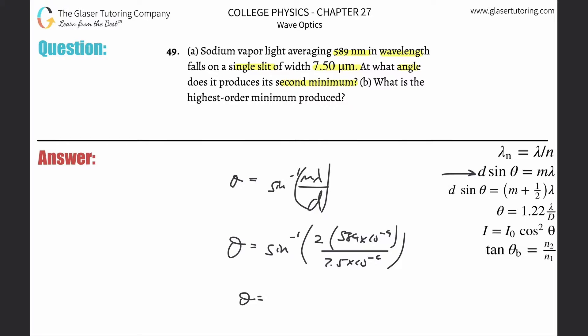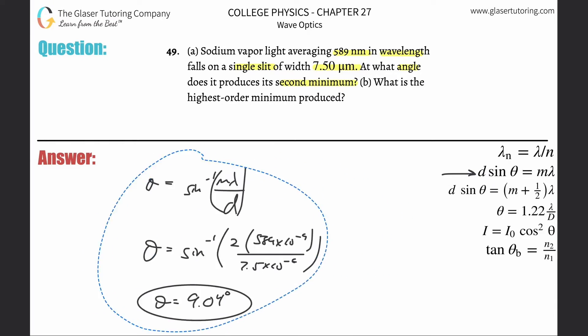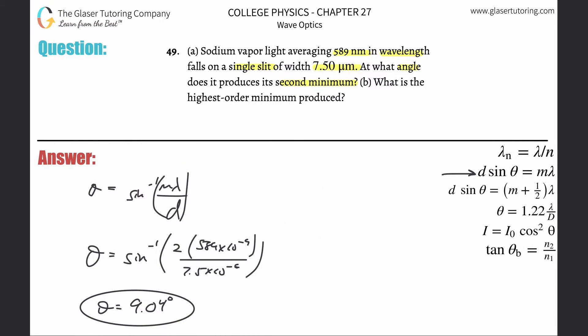Take out the calculator and make sure it's in degree mode. Inverse sine of 2 times 589 times 10 to the minus 9th divided by 7.5 times 10 to the minus 6th. I'm getting a value of about 9.04 degrees. There's the degree sign at the top. That takes care of part A.